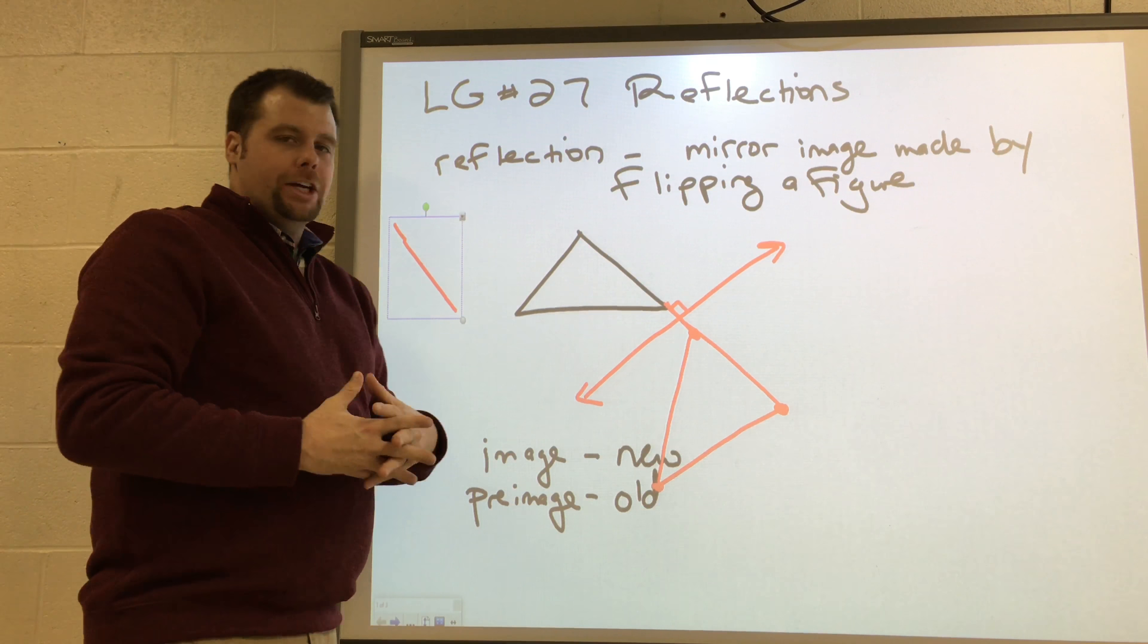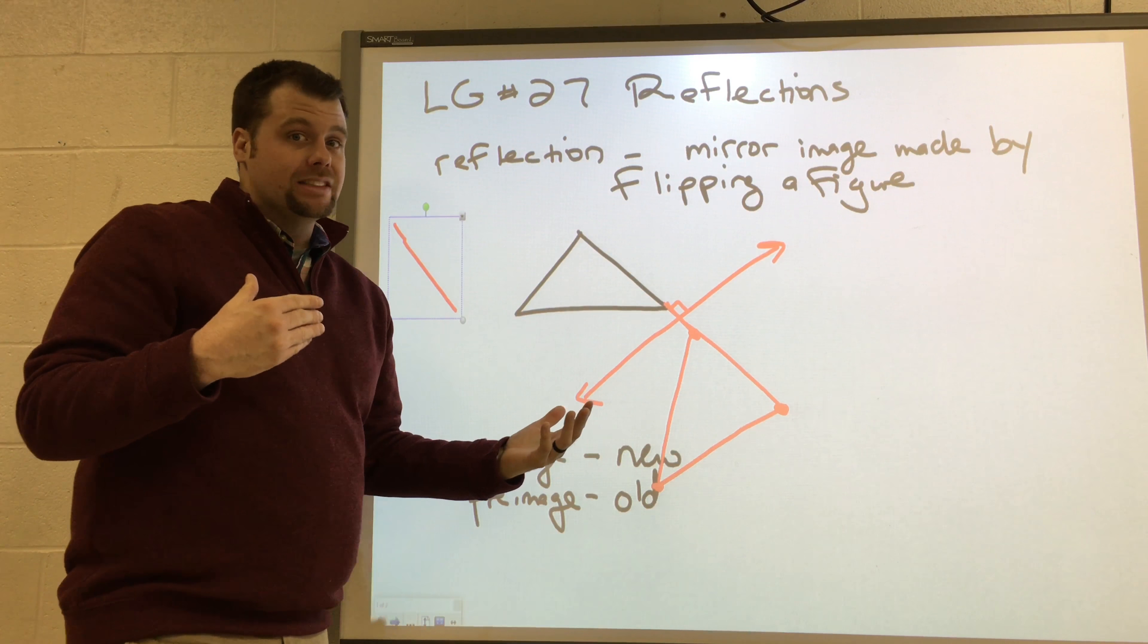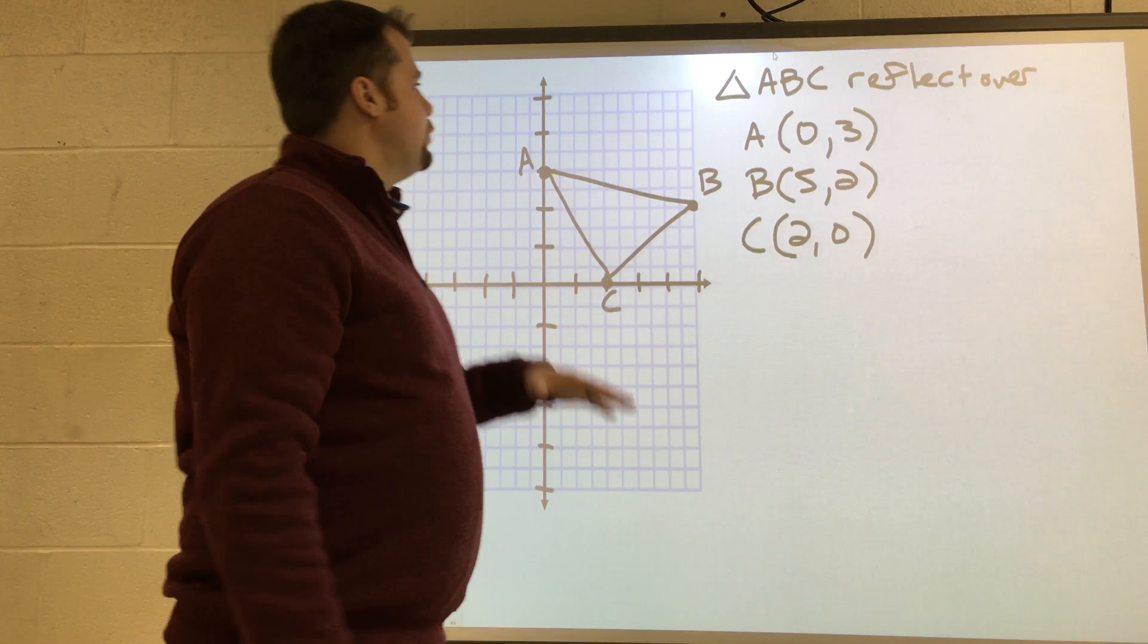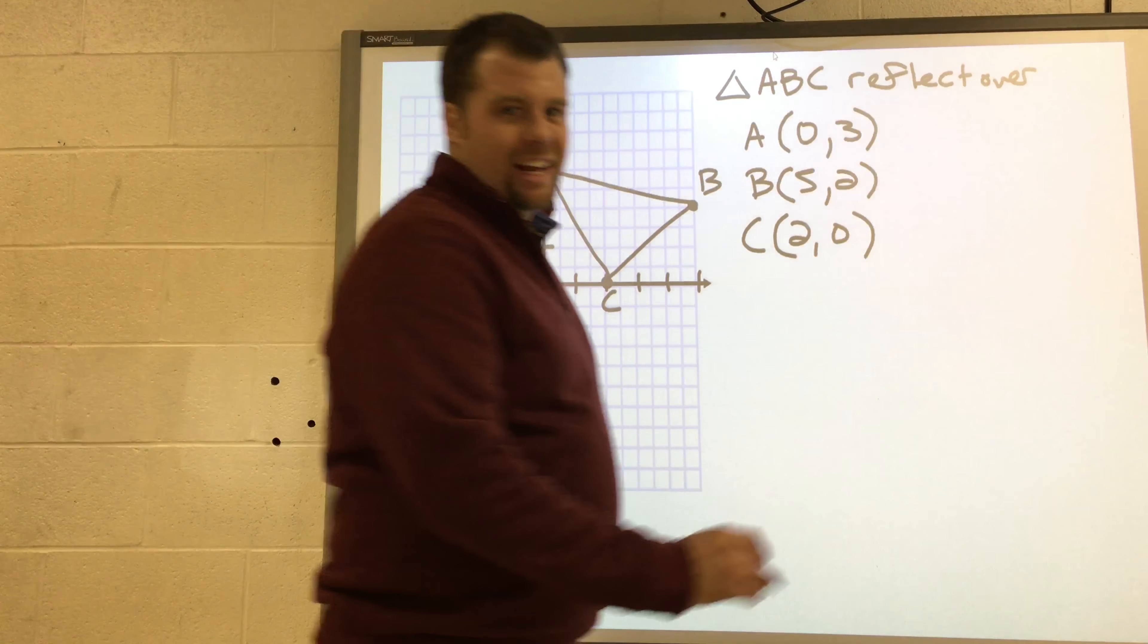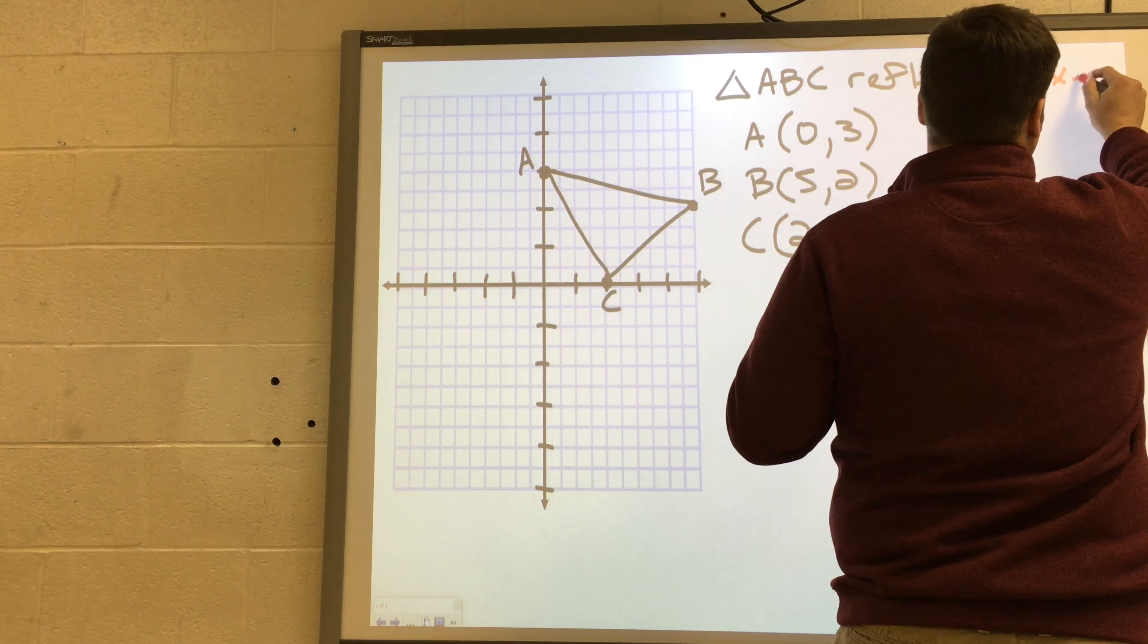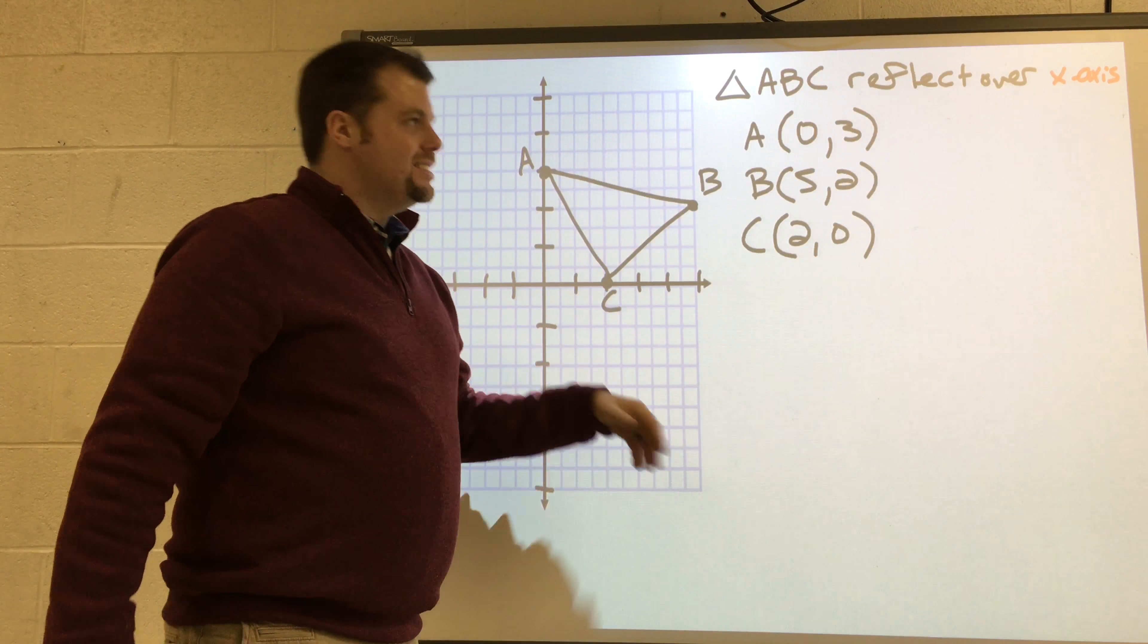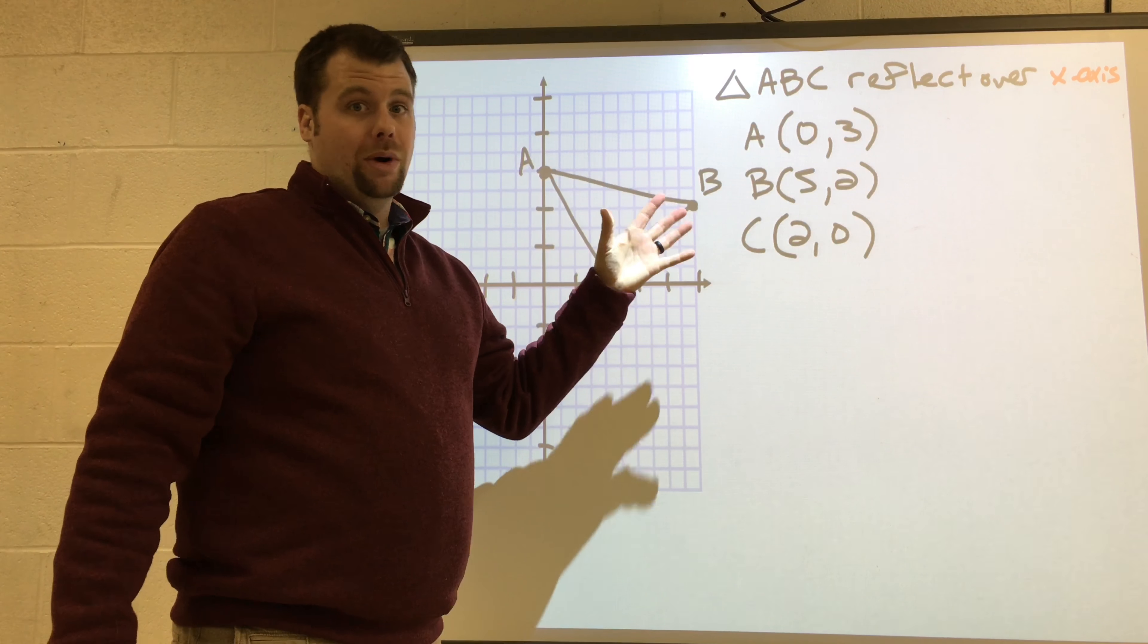Now, we're going to be looking at reflections mostly in coordinate planes. So here we have triangle ABC, and we're going to reflect this over the x-axis. I'm going to move every point across the x-axis, and I'm going to take notice of the points themselves.